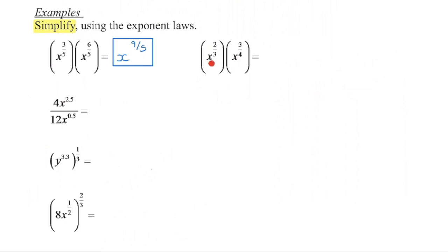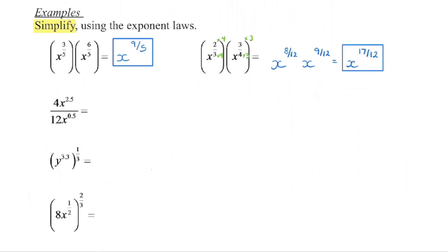In this next example we're again multiplying powers with the same base, so we're going to add the exponents. When we add two-thirds plus three-quarters, we need a common denominator. The lowest common denominator is twelve. The first denominator is three, so we multiply by four to get twelve, and multiply the numerator by four to keep it equivalent. The second denominator is four, so we multiply by three to get twelve, and multiply the numerator by three to keep it equivalent. Then we add the numerators: eight plus nine is seventeen, and the denominator stays the same.